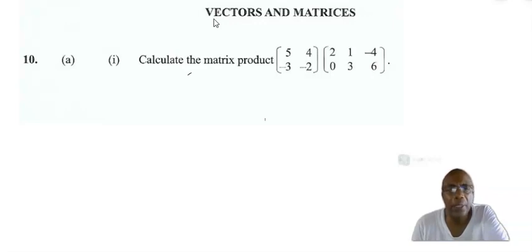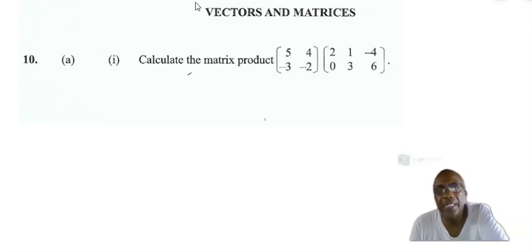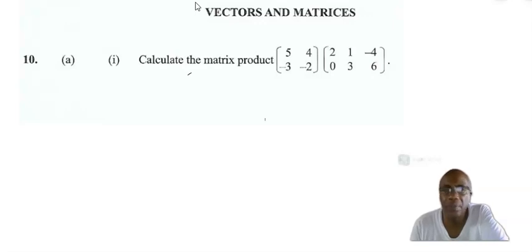The first part of the question is a matrix product question where you are asked to multiply two matrices. What you must remember is that to multiply any two matrices, you multiply each row in the first by each column in the second. You must have the same number of terms across in the first matrix as down in the second — in other words, the same number of columns in the first matrix as rows in the second.